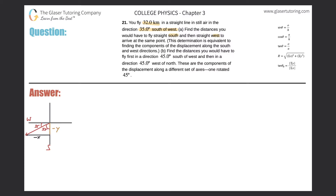The magnitude of the red vector is 32 kilometers. To solve for x: I know the hypotenuse is 32, the angle is 55°, and I want the side opposite that angle, so I'll use sine. Sine of 55 equals negative x over 32, so negative x equals sine of 55 times 32, which gives us 26.